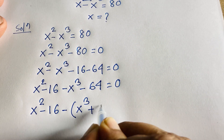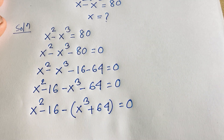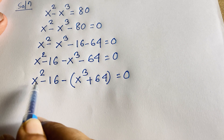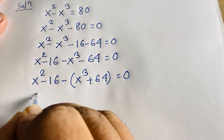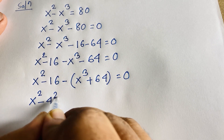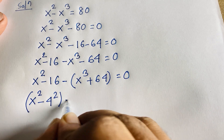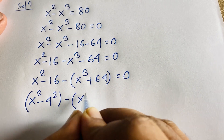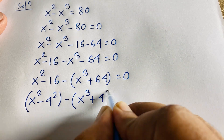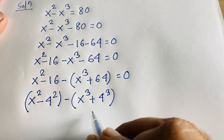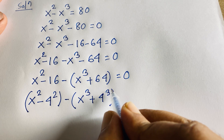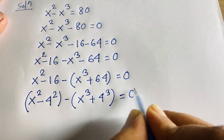This equation becomes: here is (x squared minus 16) and since minus is common, it becomes minus (x cubed plus 64) equals 0. So we have (x squared minus 4 squared) minus (x cubed plus 4 cubed) equals 0, where 4 cubed equals 64.